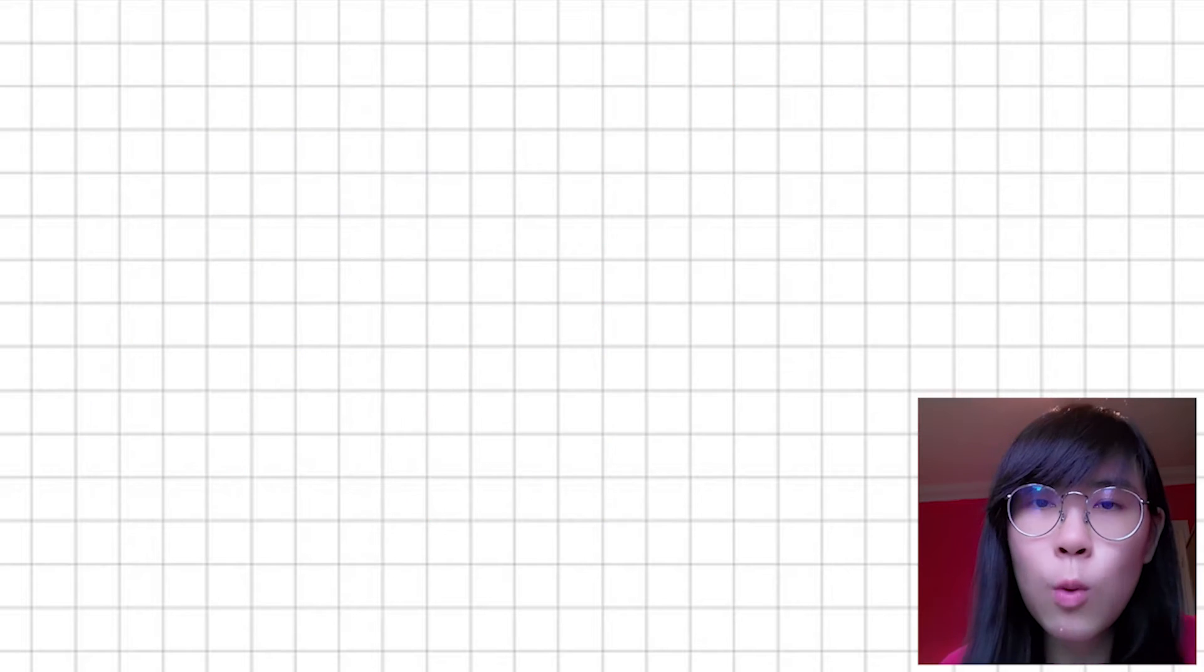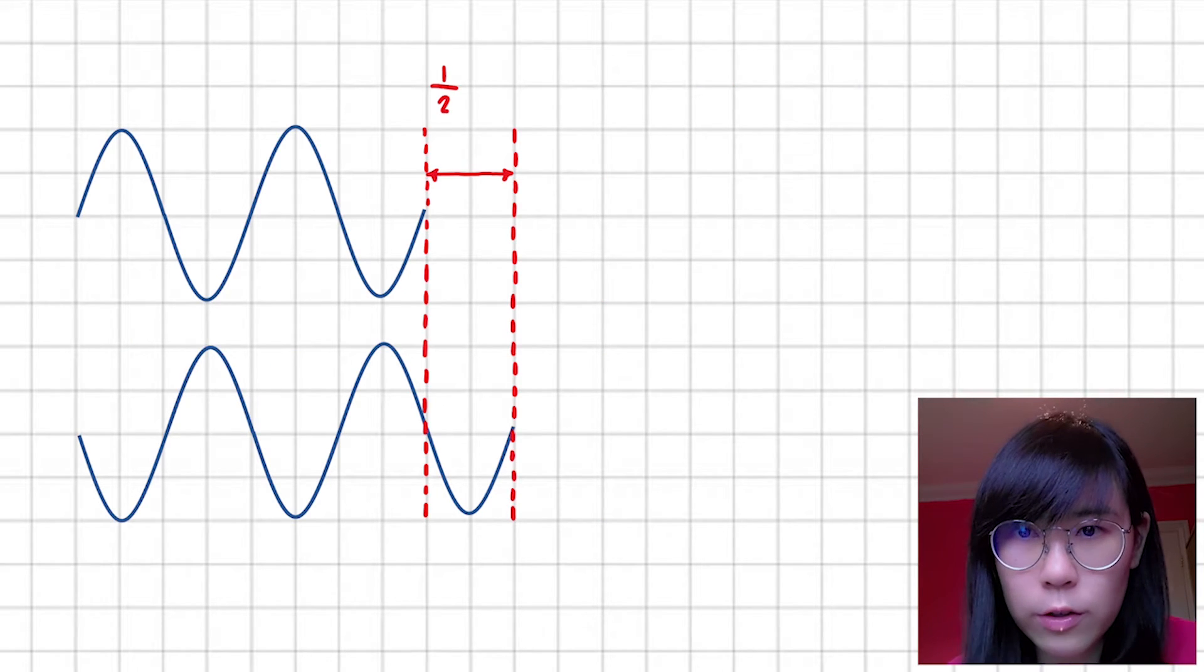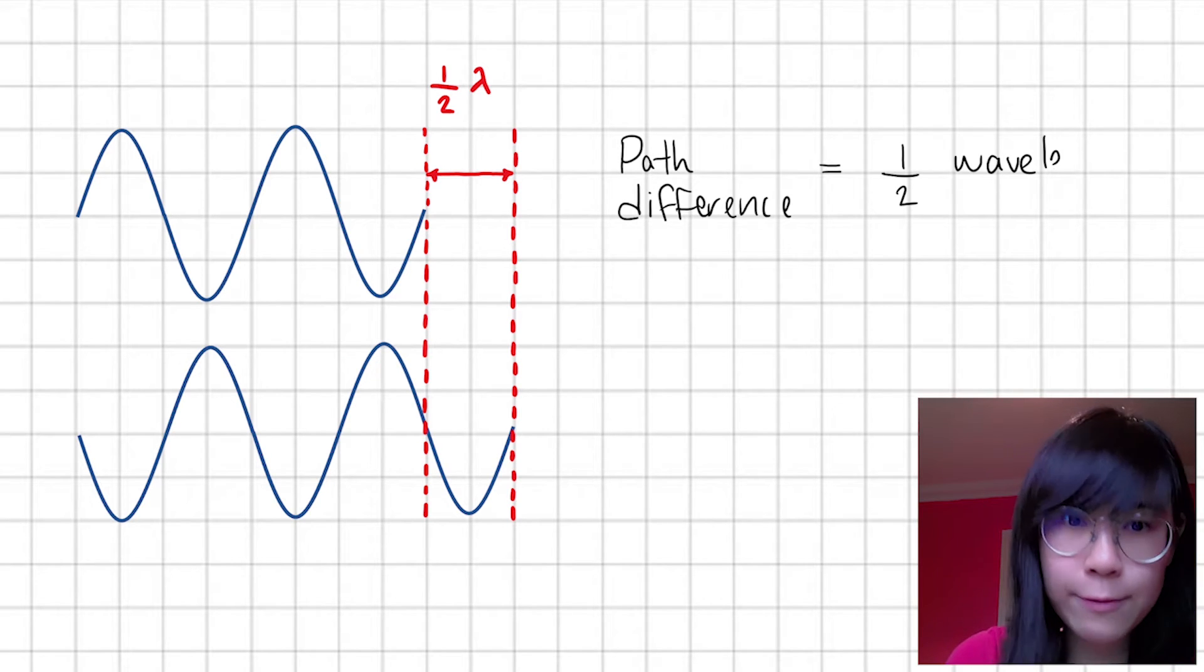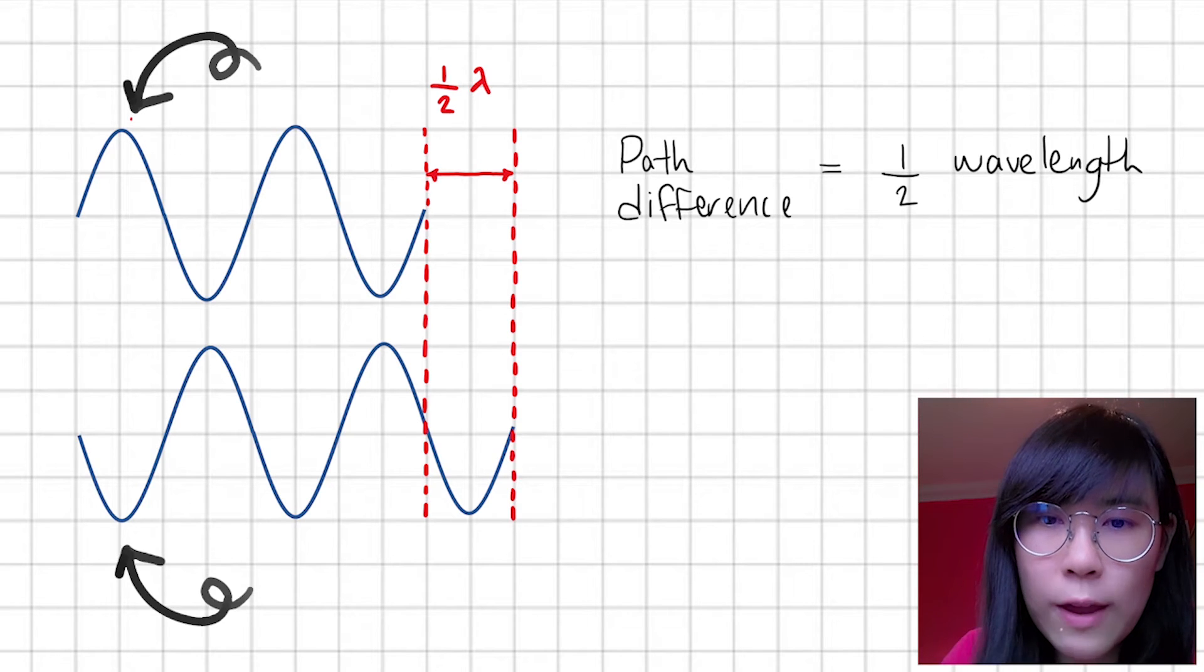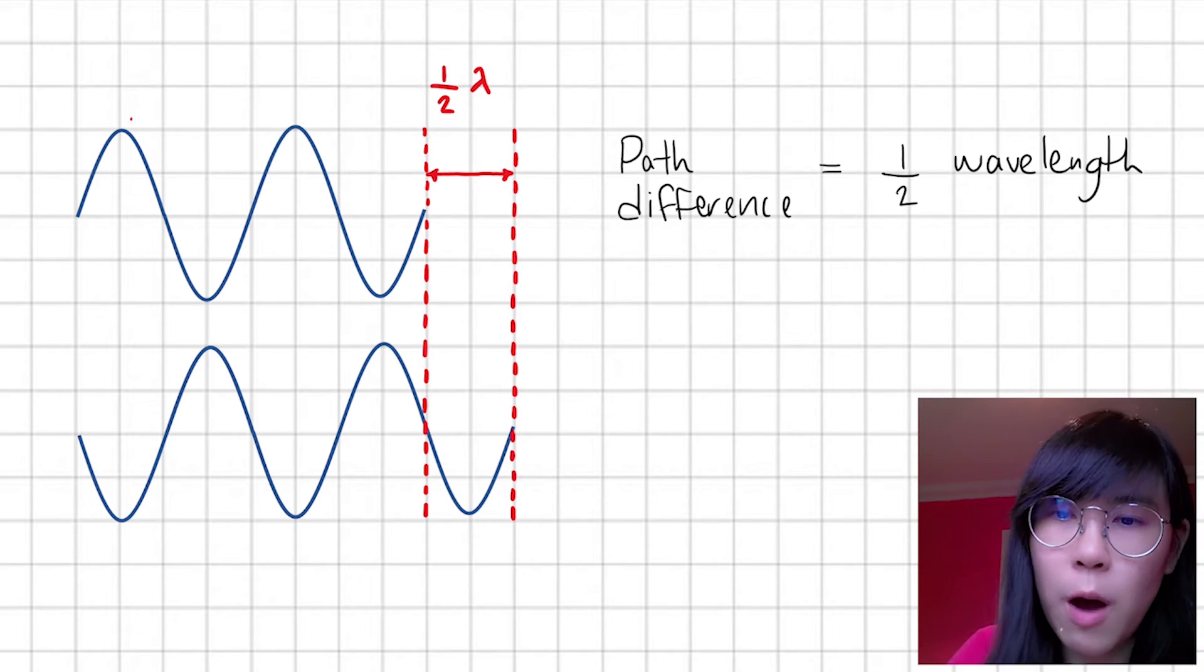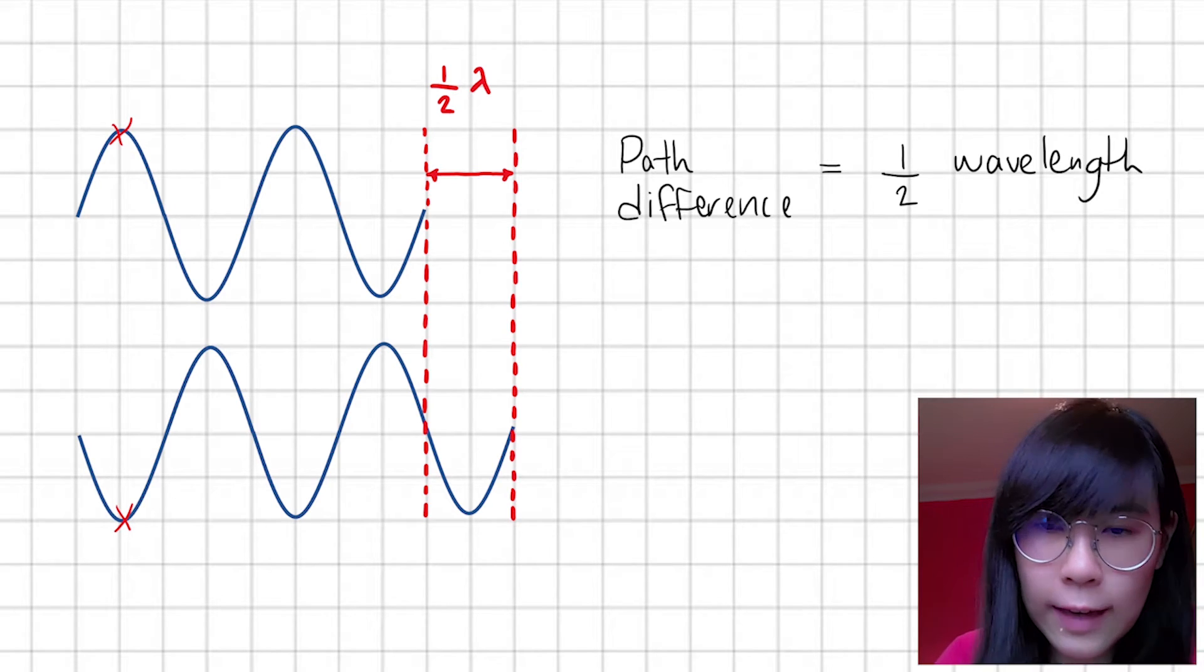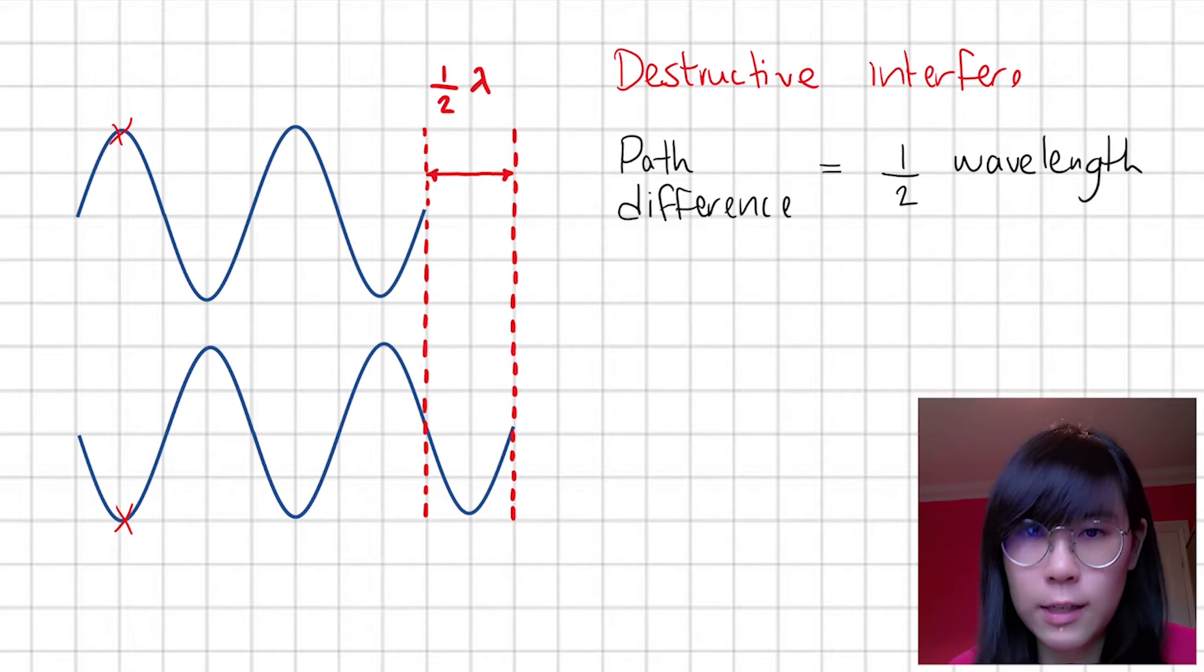In a different situation, we now have two waves which are only half a wavelength apart. So we say that their path difference is just half a wavelength. When they superpose, the crests of this wave align with the troughs of the bottom wave. If I take these two points, they add up to zero. They cancel each other out to give us what's known as destructive interference.